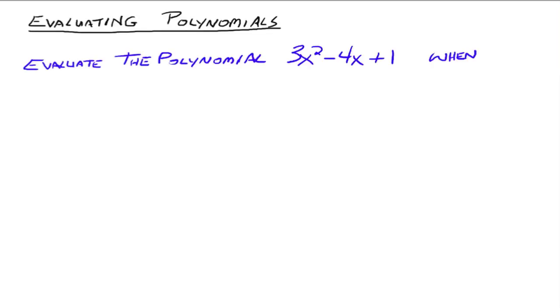Now let's talk about evaluating polynomials. We want to evaluate the polynomial 3x squared minus 4x plus 1. The general idea for evaluating polynomials is you're trying to find the value of the polynomial when the variable is something else, usually a number but it doesn't always have to be a number. You're substituting values or expressions in for the variable x and seeing what happens with the polynomial. Most of the trouble comes from following the order of operations after we make the substitution.